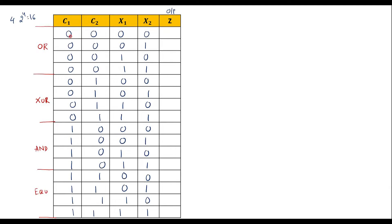When C1 is 0 and C2 is 0, it performs OR on inputs X1 and X2. So: 0 OR 0 = 0; 0 OR 1 = 1; 1 OR 0 = 1; and 1 OR 1 = 1.